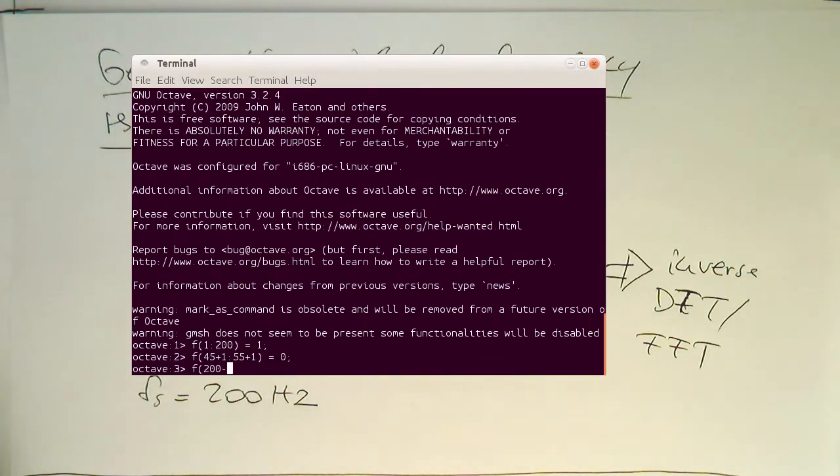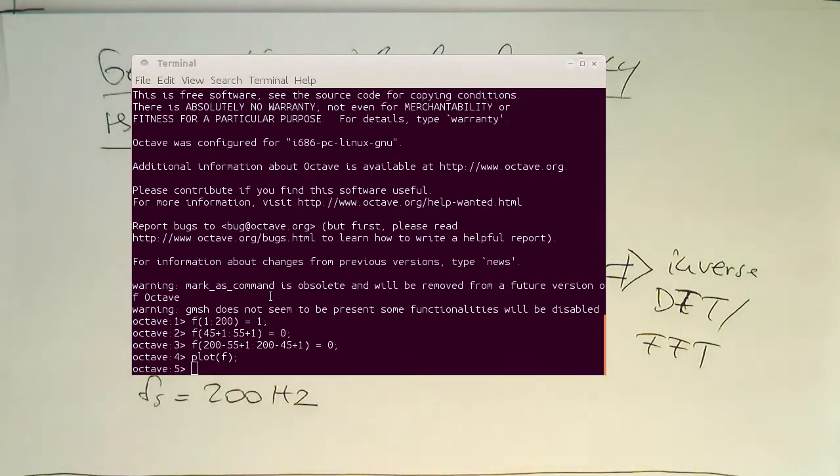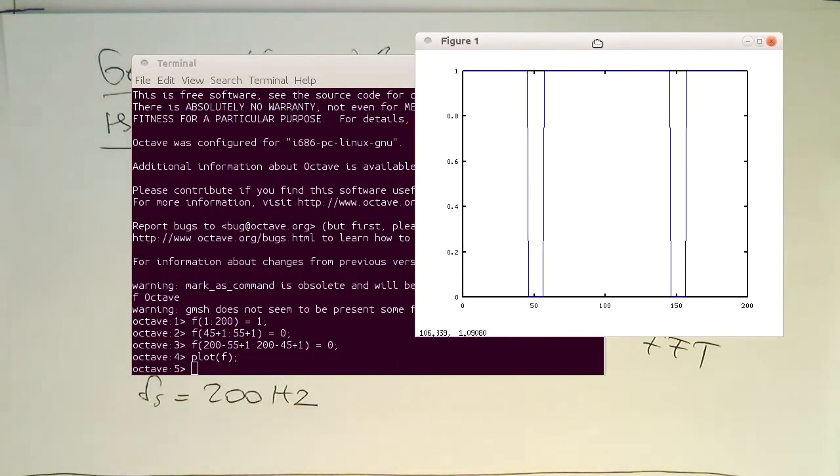Remember the plus one is the MATLAB convention or the octave convention. And then the mirror. So 200 minus 55 plus one. 200 minus 45 plus one. And we set this to zero. So with this, so if you plot that, then this should create a nice boring brick-like response. What we see here.